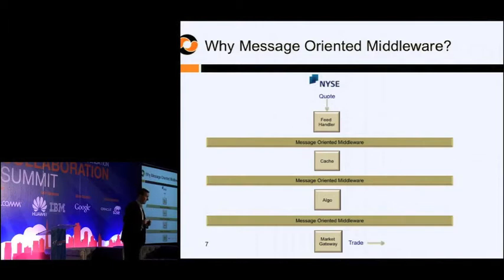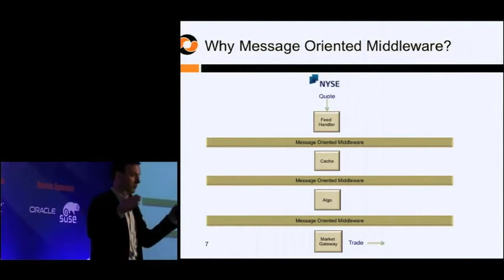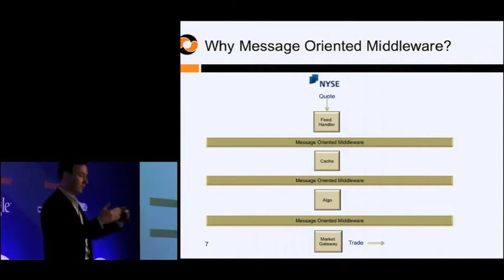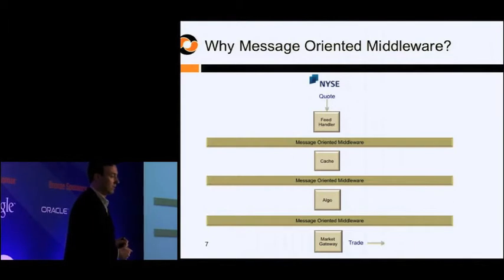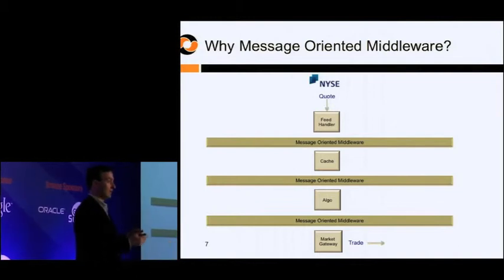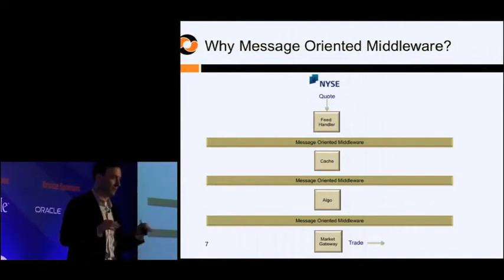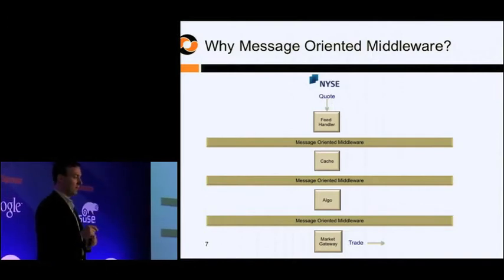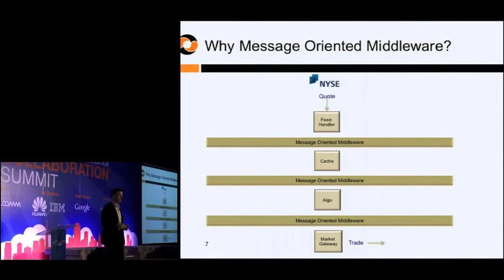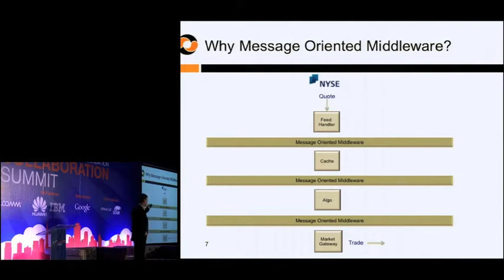The feed handler normalizes the data and sends that update as a message on a middleware system to a caching system. The cache is a last-known-value cache — there might be a hundred fields in a record and only ten changed, so it takes the ten new fields, inserts them into the cache, and then the cache publishes the update down to an algorithm. The algorithm decides if it's a good time to buy or sell, creates an order, and sends it to a gateway, which formats the trade into a message that the target exchange understands.